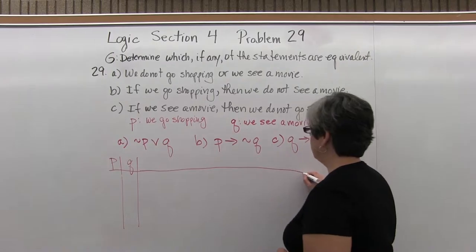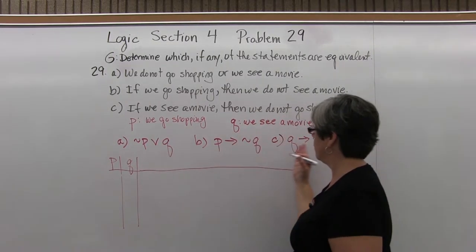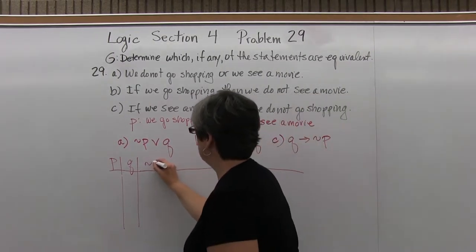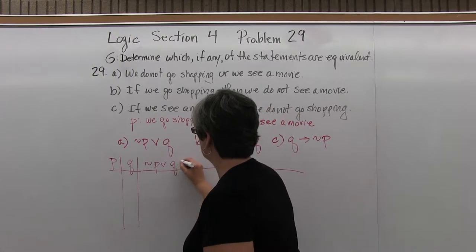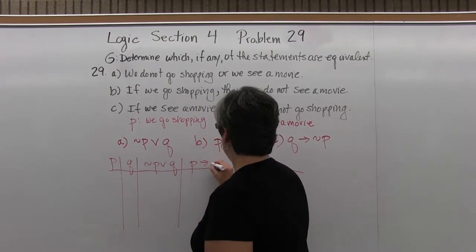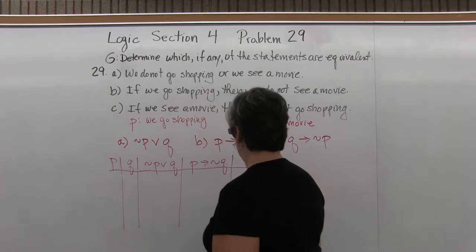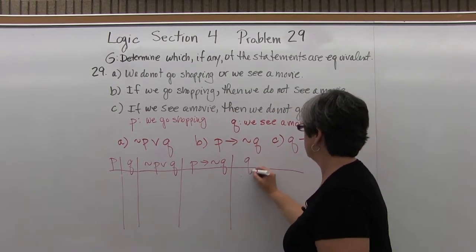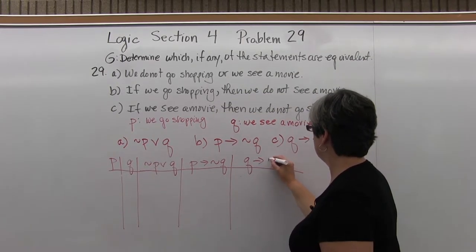So we need a truth table that allows room for each of these statements: not P or Q, if P then not Q, and if Q then not P.